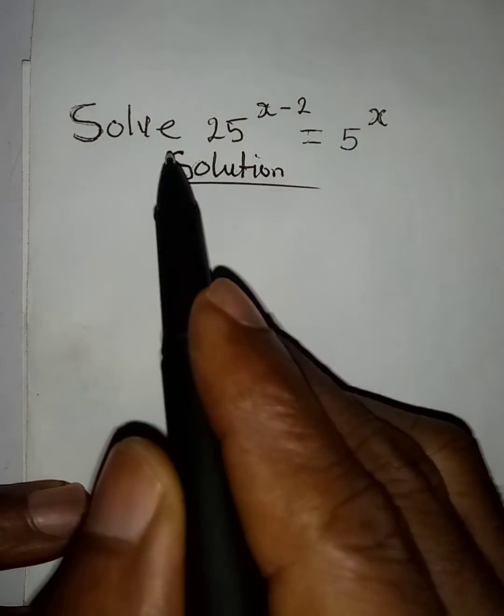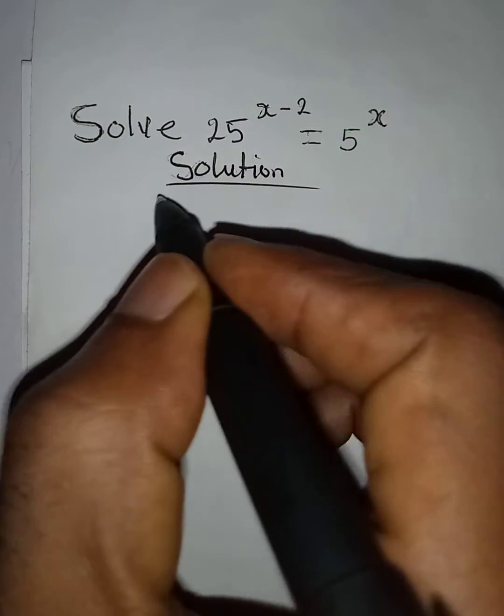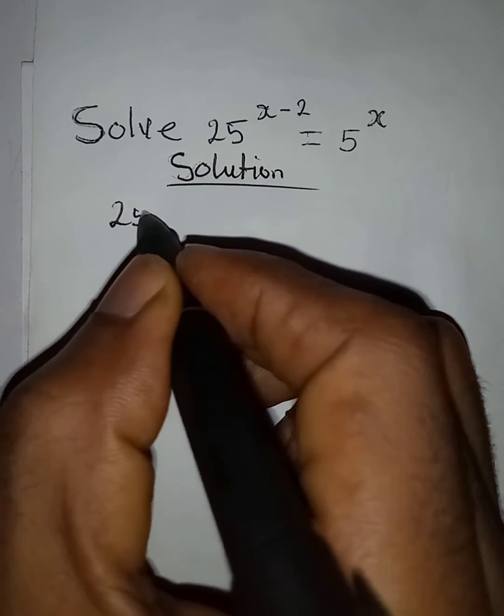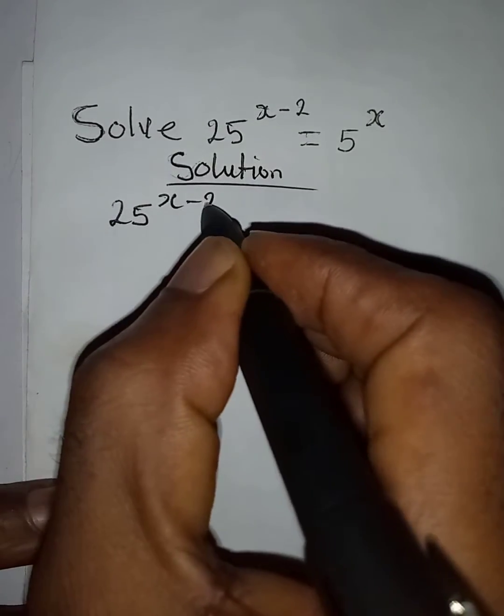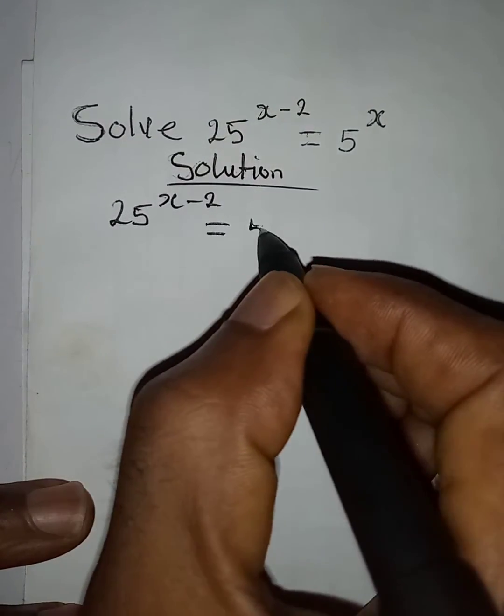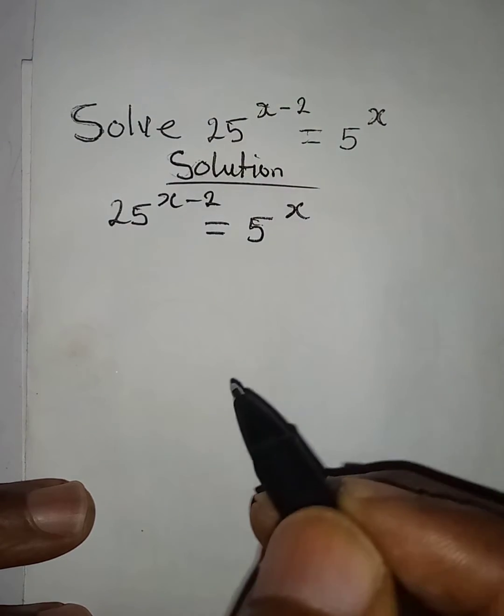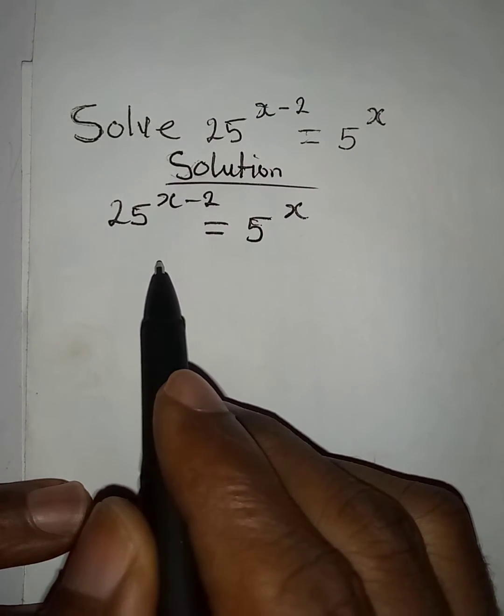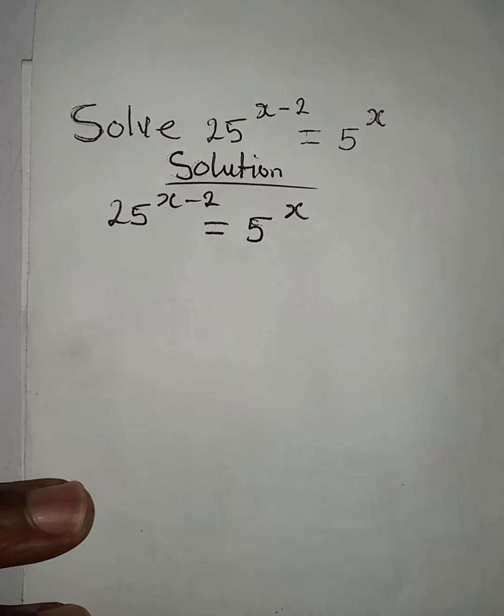Hello everyone, let us solve this simple problem. We have 25 to the power of x minus 2 equals 5 to the power of x, and this means that we should find the value of x.